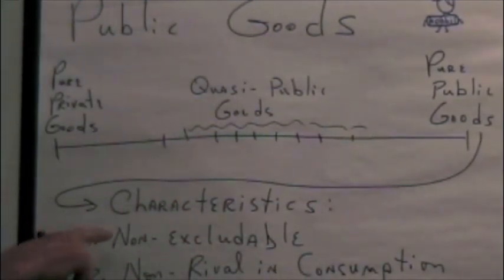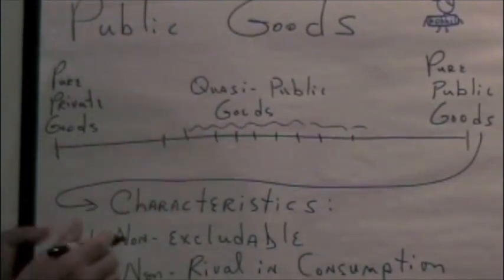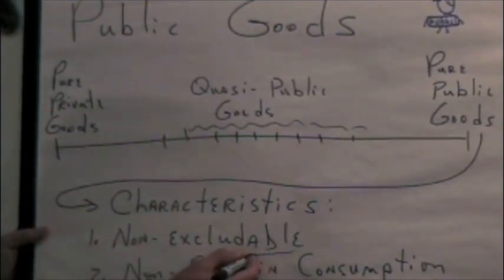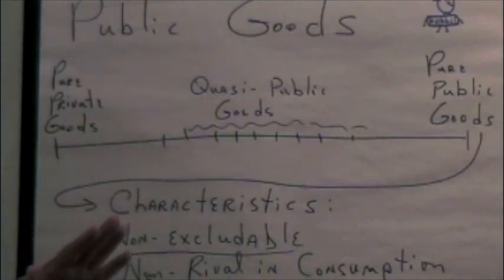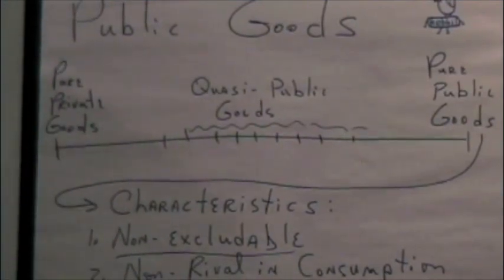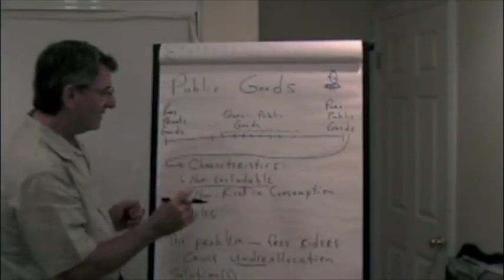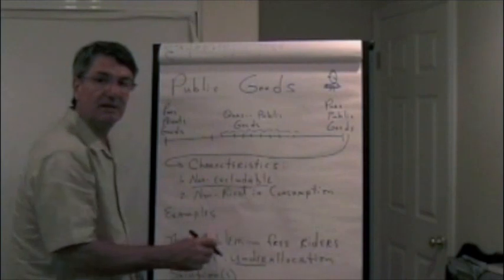A pure public good has two characteristics. One is it is not excludable. Others cannot be excluded from enjoying the item in equal measure to the person who provided it. The other characteristic is it is non-rival in consumption.